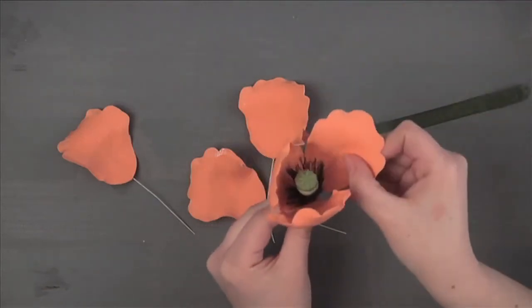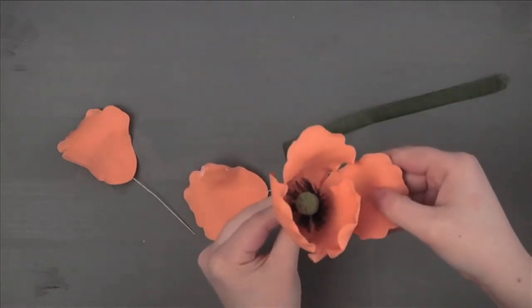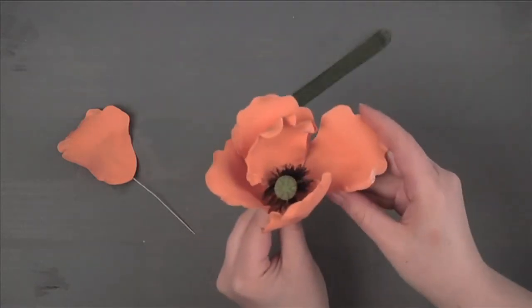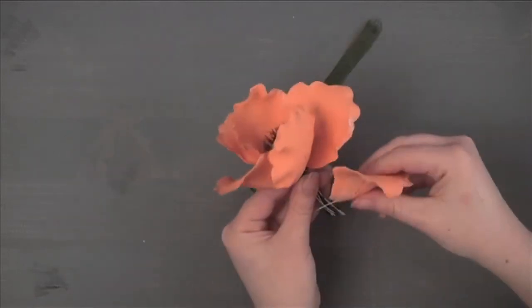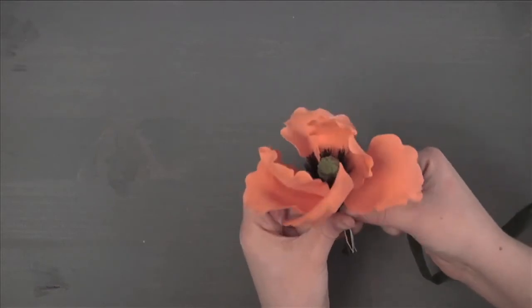Tape the four outer petals underneath and between the inner petals. Adjust the petals as needed and trim the stamen if needed. Wrap all wires together with floral tape.